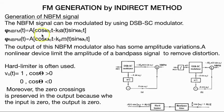Going forward with FM generation by indirect method, the NBFM signal can be modulated by using DSB-SC modulator. The output of this NBFM modulator also has some amplitude variations. A nonlinear device limits the amplitude of a bandpass signal to remove distortion. Hard limiter is often used where for cos theta greater than 0 equals 1, and cos theta less than 0 equals 0.